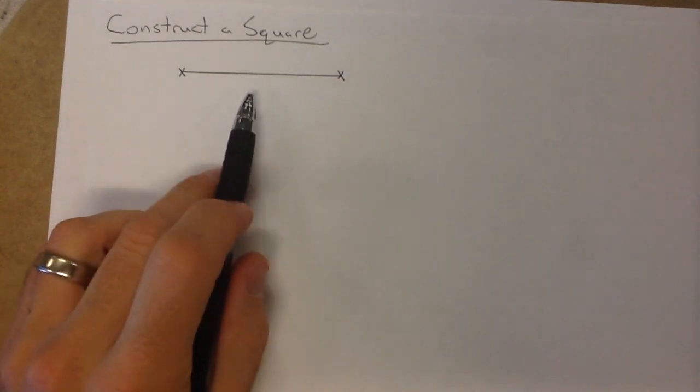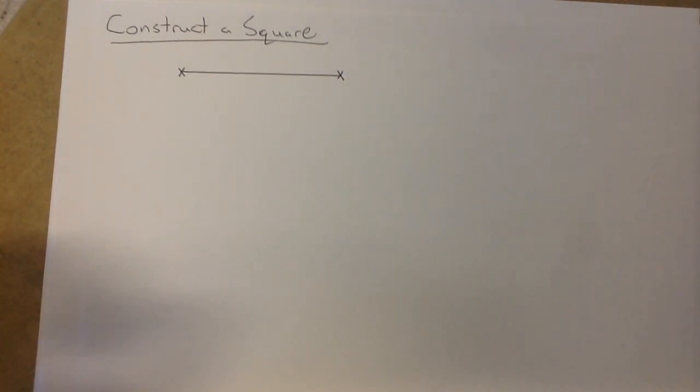When we want to construct a square, we're going to be given a segment to start with. So that's going to be my segment, or all my sides, for the square.